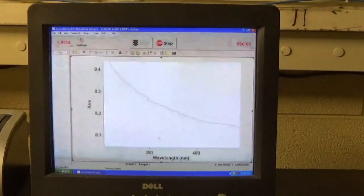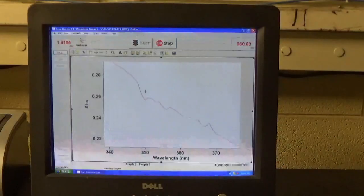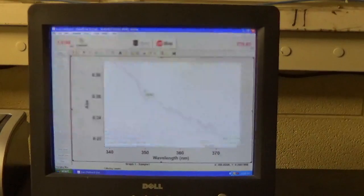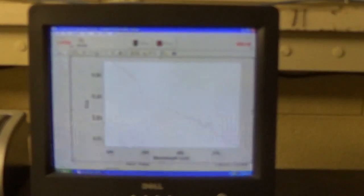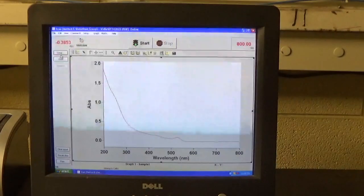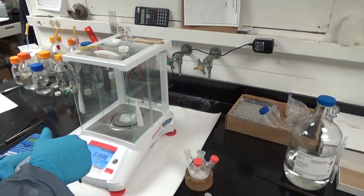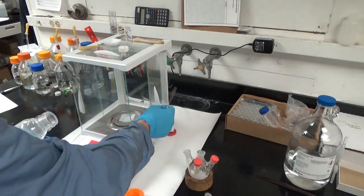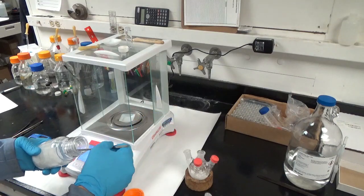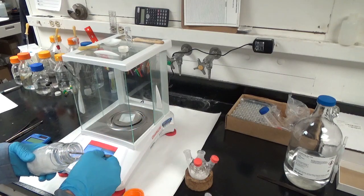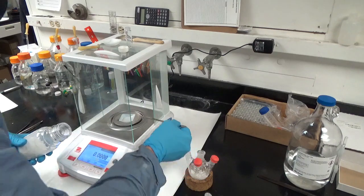My regression for calculating the concentration of QDs in my stock is based on knowing the first absorption feature, which tells me the size, and then the absorptivity at 350 nanometers for which I have the Beer's law coefficient.